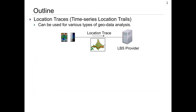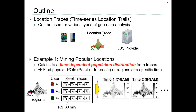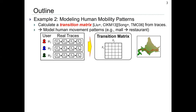First, I briefly explain the outline of this work. Nowadays, a large amount of location traces are collected by an LBS provider, and they can be used for various types of geodata analysis. For example, we can calculate a time-dependent population distribution from traces, which can be used for finding popular POIs such as popular restaurants at lunchtime. Another example is a transition matrix, which is composed of a transition probability from some location to another location, so it can be used for modeling human movement patterns such as mall to restaurant.